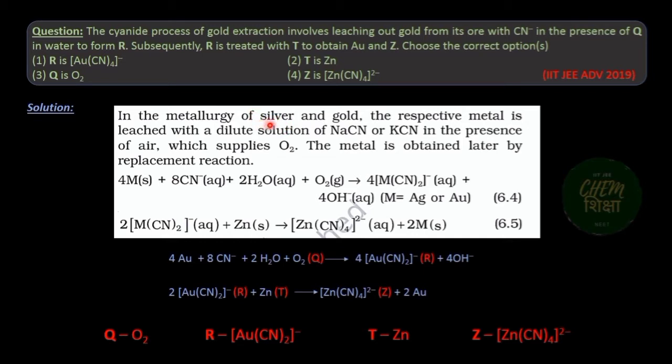It is stated here that the process of leaching for silver and gold is the same. So in general, metal M is written here for silver and gold. To solve this question we must consider the metal gold here in these equations.